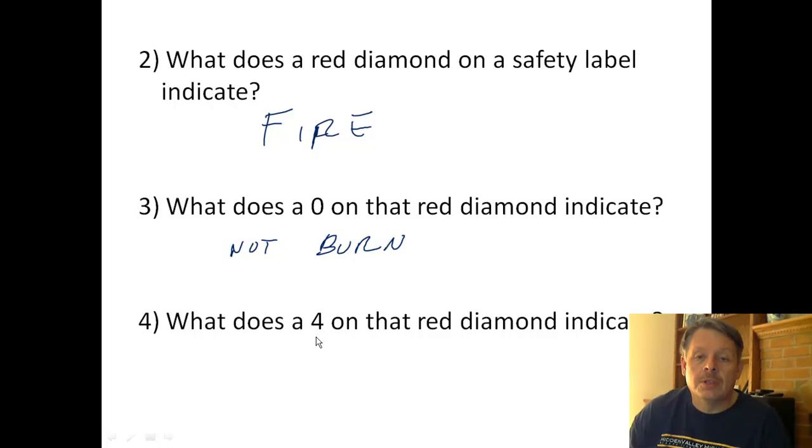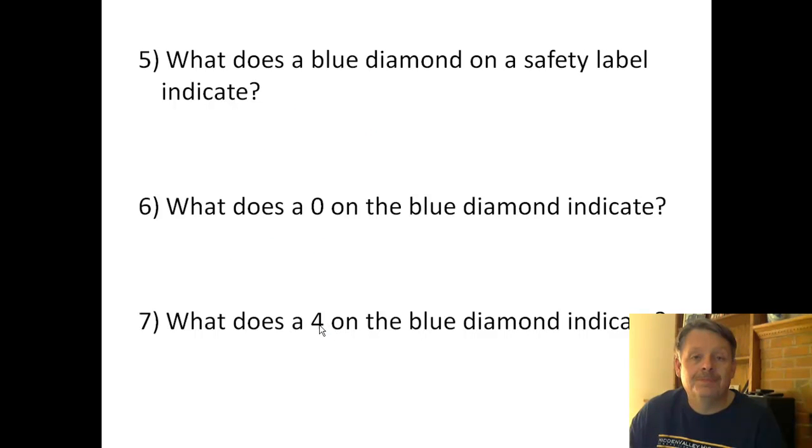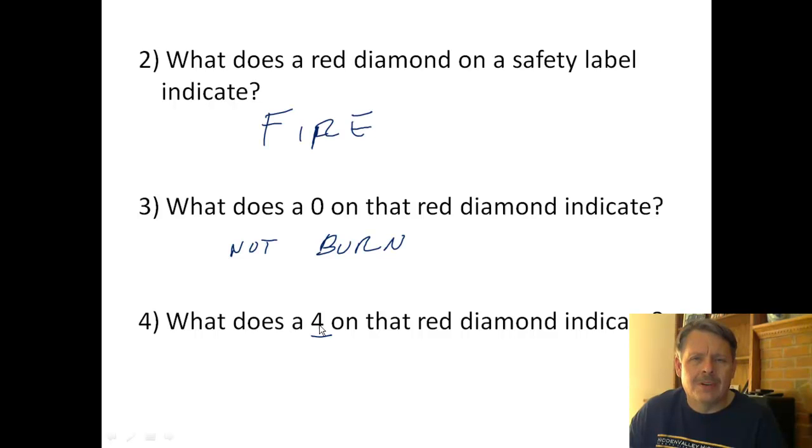A four on the diamond—and four is the highest number—would indicate that this thing will just start burning spontaneously at room temperature, for example. It's really, really dangerous. So this is something you don't want to mess with. And by the way, we don't have any of that in the lab.